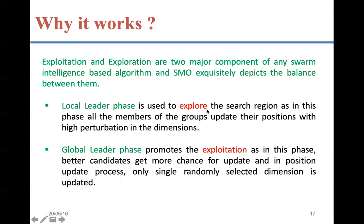The logic is as follows: the local leader phase is used to explore the search region because in this phase all members of the group update their positions with a high perturbation rate. The value of pr is usually high — around 0.7 or 0.8 — so there are very high chances that the position is updated in this local leader phase. This promotes exploitation in the global leader phase.